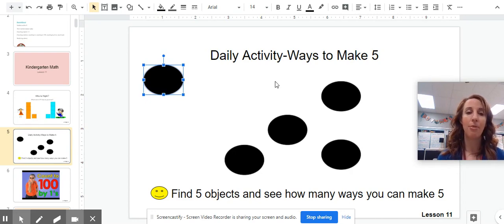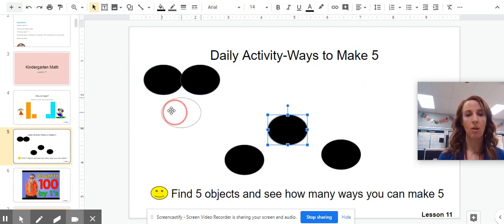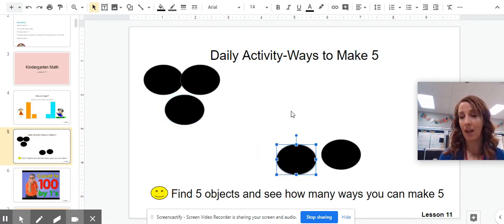If I have three dots over here, how many will be left on this side to make five? Let's see. One, two, three. Now we know that three and two more dots makes five altogether.